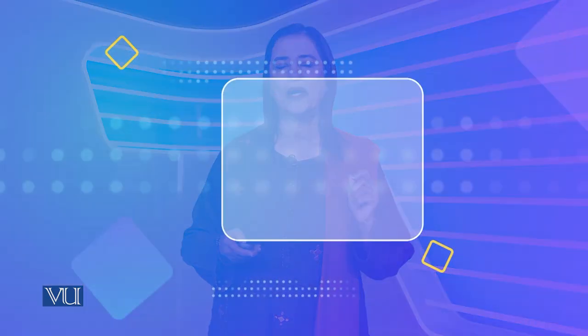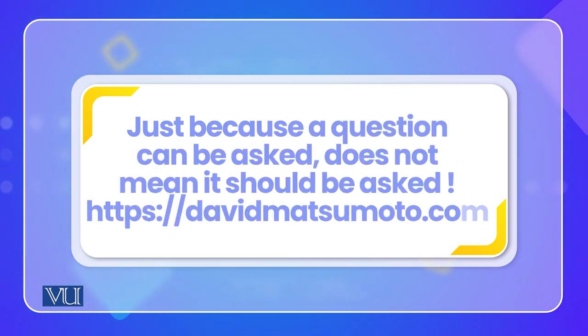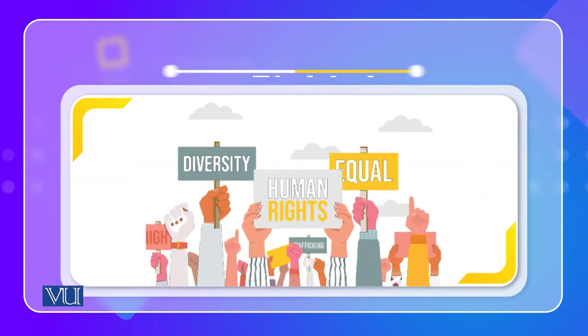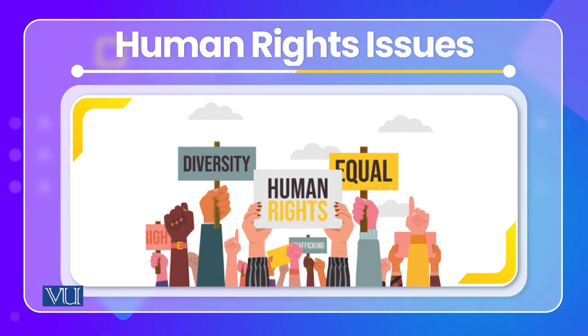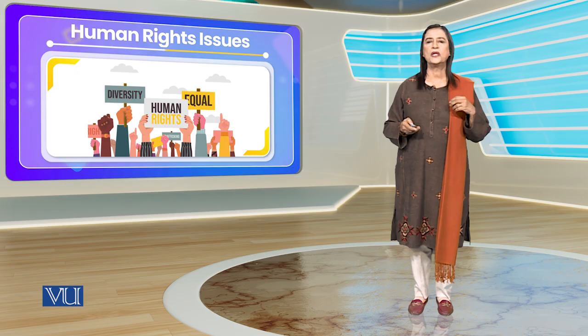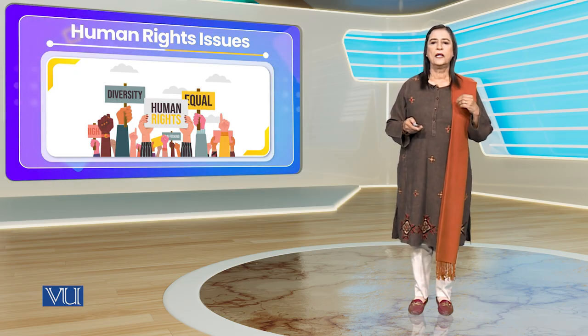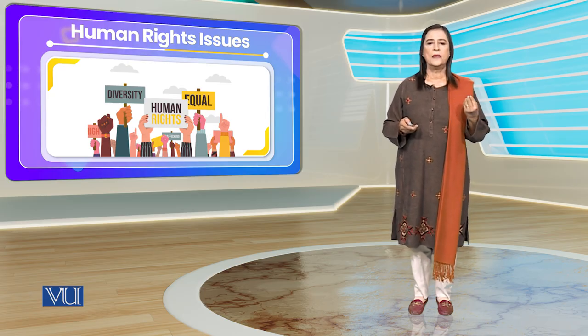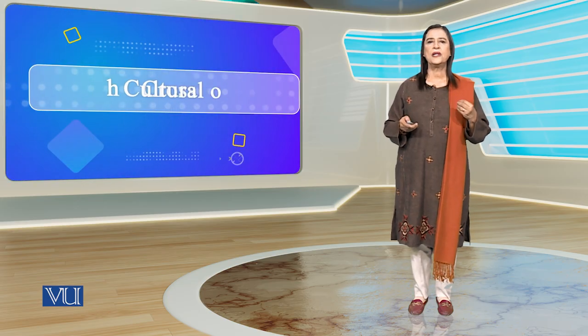Researchers must consider whether to provide counseling after research and how to protect and safeguard data — each country may not have the same standards for this. An important point is that just because a question can be asked does not mean it should be asked. In some countries, human rights issues exist where people lack basic freedoms, face injustices, and have no legal rights — so how do you collect data in those cultures while maintaining ethical principles?